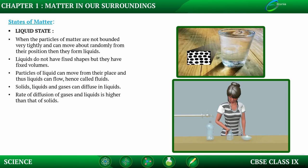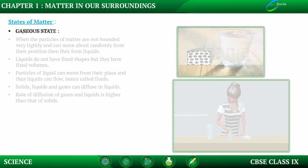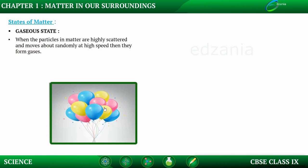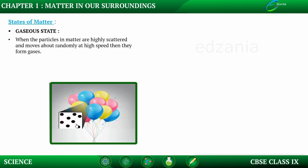What is gaseous state? When the particles in matter are highly scattered and move about randomly at high speed, then they form gases. For example, gas is filled in balloons. The microscopic view of the arrangement of particles in gases shows that the particles are highly scattered with large amounts of space in between them, which is why they are free to move randomly at high speed. Gases are highly compressible due to the large intermolecular space between them.